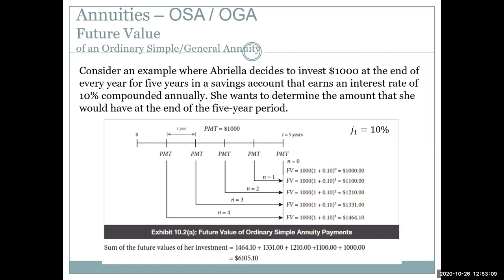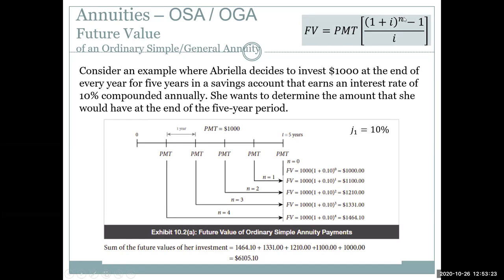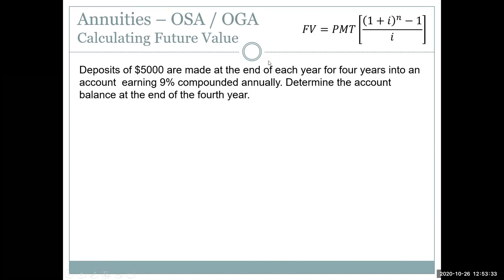The quicker formula summarizes this: FV = PMT × [(1 + i)^n − 1] / i. Let's apply it. Deposits of $5,000 at the end of each year for four years at 9% compounded annually — that's an ordinary simple annuity, and we want the account balance at the end of year four, which is the future value.